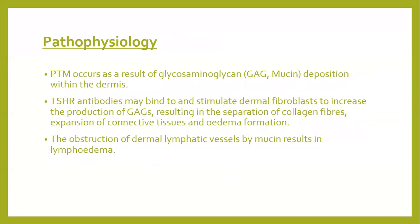Pathophysiology: PTM occurs as a result of glycosaminoglycans deposition in the dermis and subcutaneous tissue. The thyroid stimulating hormone receptor antibodies may bind to and stimulate the dermal fibroblasts to increase the production of glycosaminoglycans, resulting in separation of collagen fibers, expansion of connective tissue, and edema formation. Obstruction of dermal lymphatics by mucin results in lymphedema, which is secondary to deposition of mucin between collagen bundles, obstructing lymphatic drainage and flow.